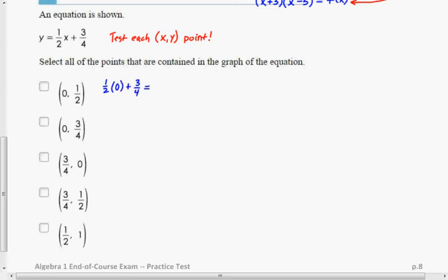What's that going to equal? When we put a 0 in for x, we get 3 fourths for y. So that one's a no. If I put 0 in for x, I do not get 3 fourths for y.